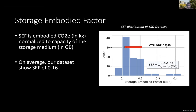On average, flash has a storage embodied factor of 0.16 kg of CO2 per gigabyte, which is very surprising. This means a terabyte of storage costs 160 kg of CO2e. To put that in context, a MacBook Pro has a total footprint of around 500 kg of CO2e — so storage represents a significant portion and we should seriously think about mitigating this carbon footprint.